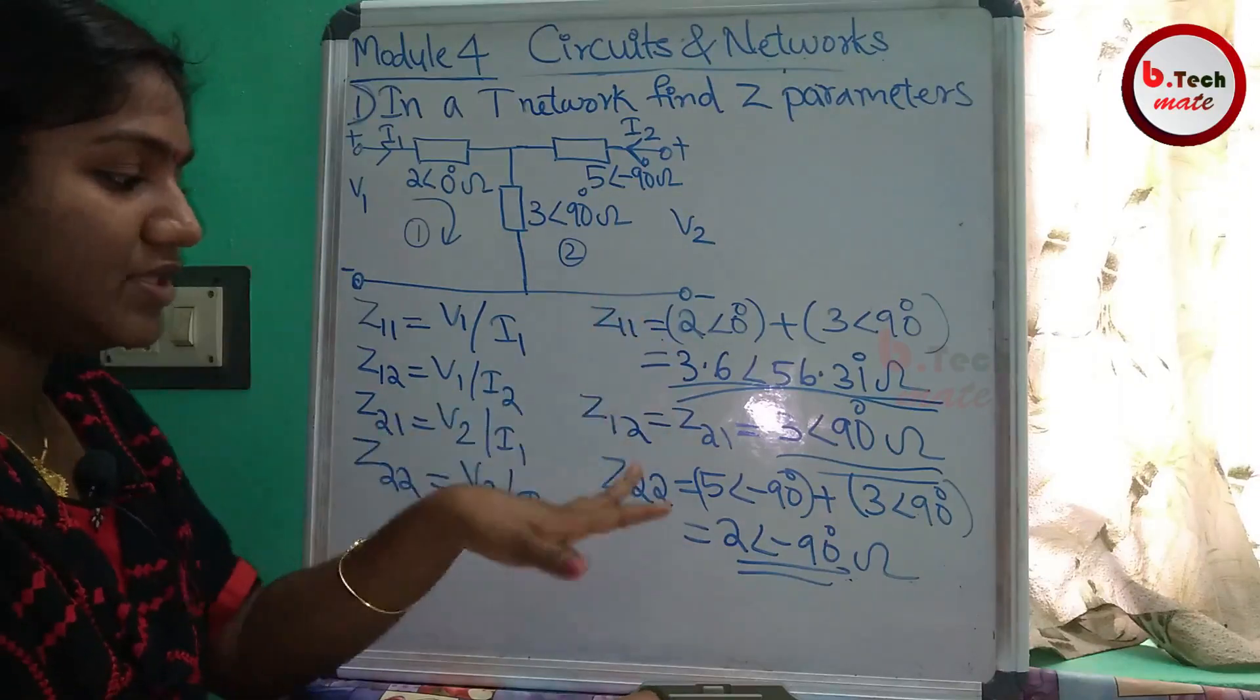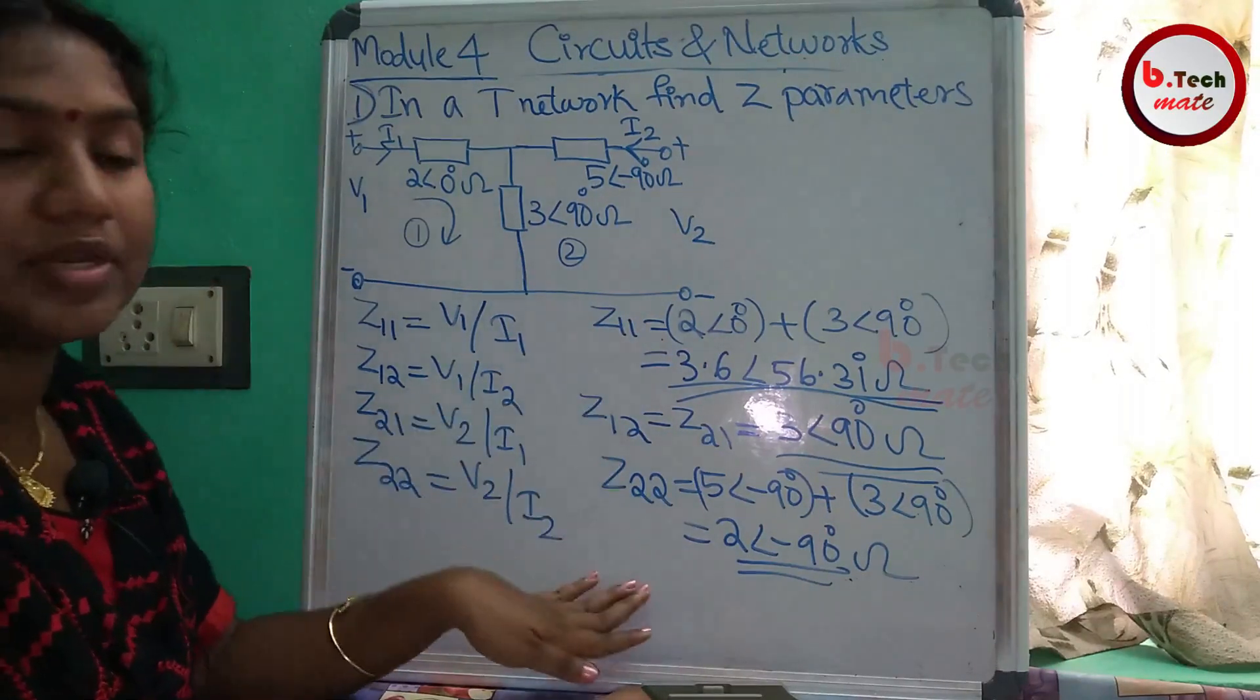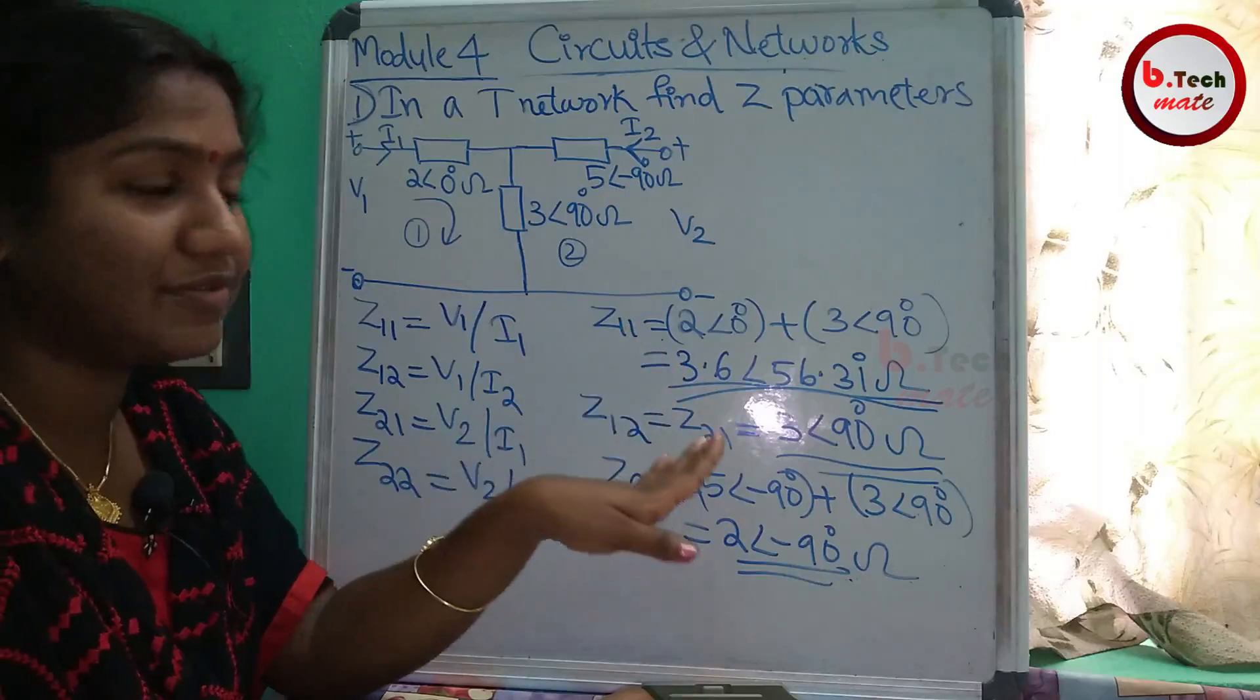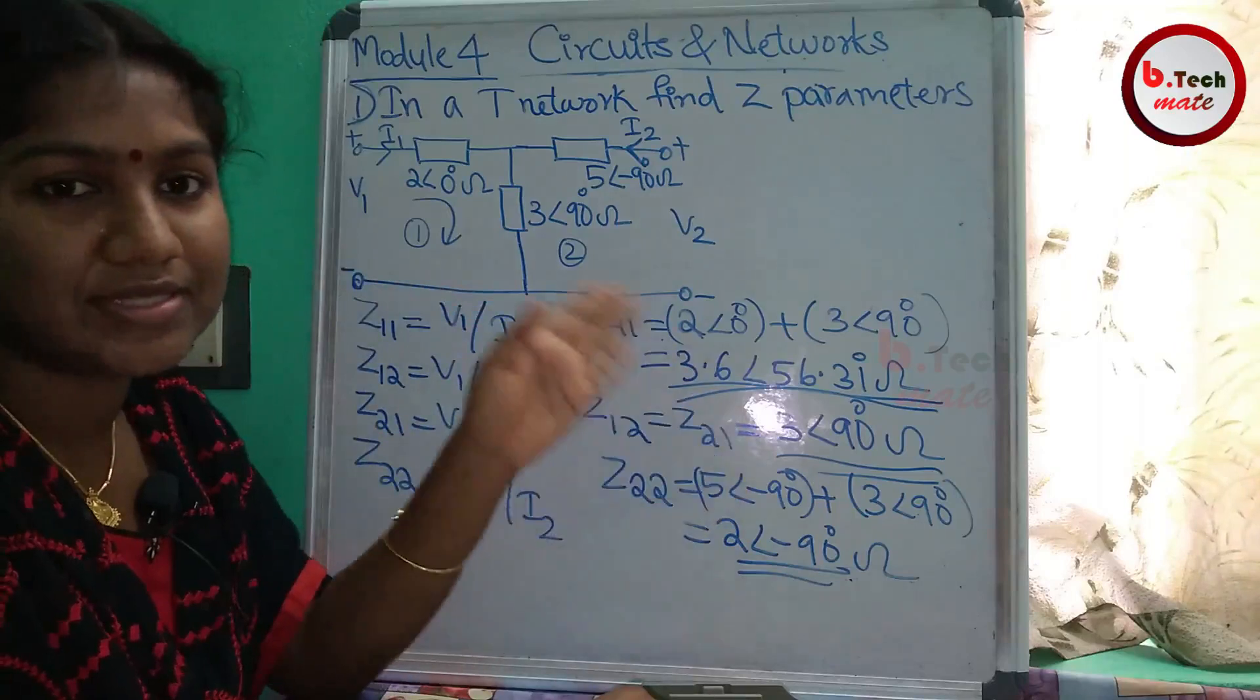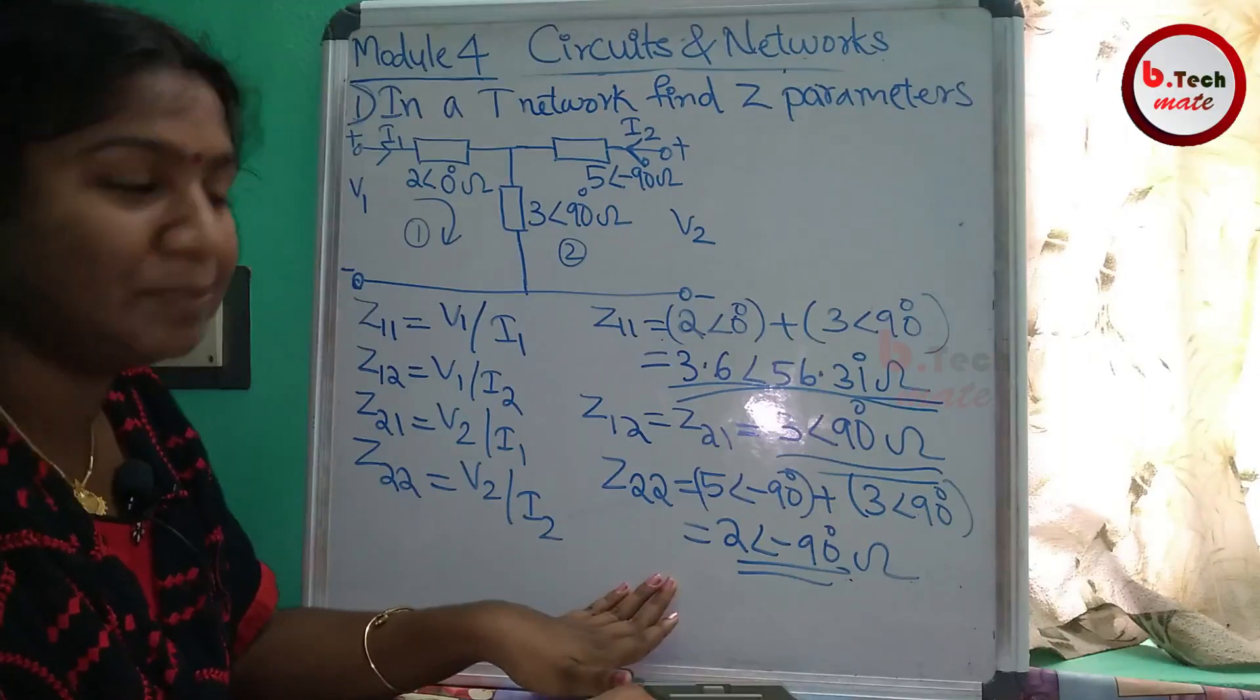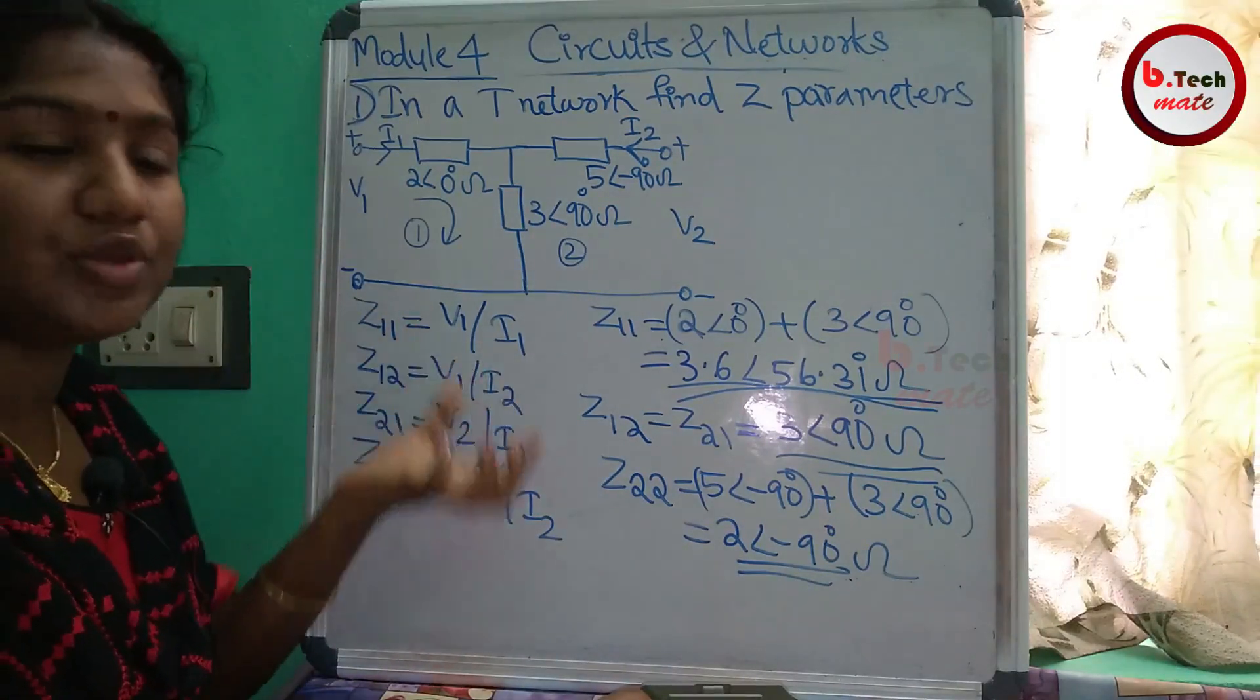And then Z11, Z21, Z12, and Z22 - let's write down these three parameters. When we see this in T-Network, we will follow that method for Z-parameters in T-Network. If you apply it, then we will follow this procedure. If we have the equations right now, we will have to review this formula.